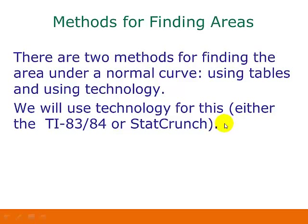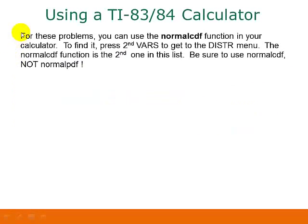We are going to use either your graphing calculator or StatCrunch, and in this video I'll be showing you how to use your TI-83 or TI-84. To find areas or probabilities for a normal distribution, we will use the normalcdf function in your calculator. To find it, press 2nd VARS to get to your distribution menu.